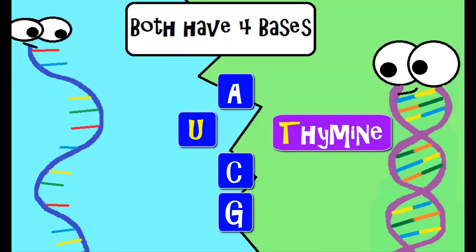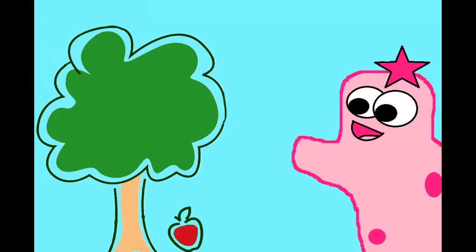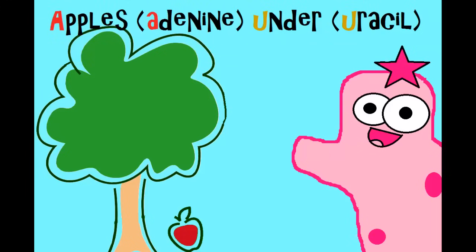So you can't remember apples in the tree for RNA. That's not going to work because there's no T. So instead, try remembering apples under. So it's kind of like they're under a tree. A for adenine and U for uracil. They go together.